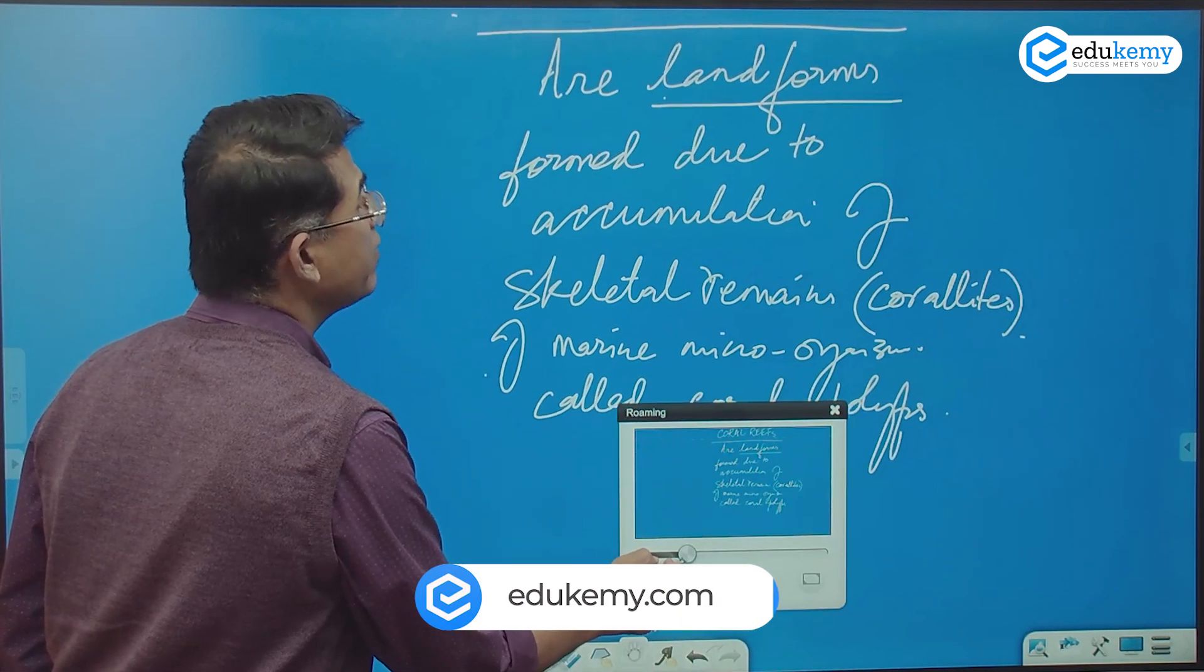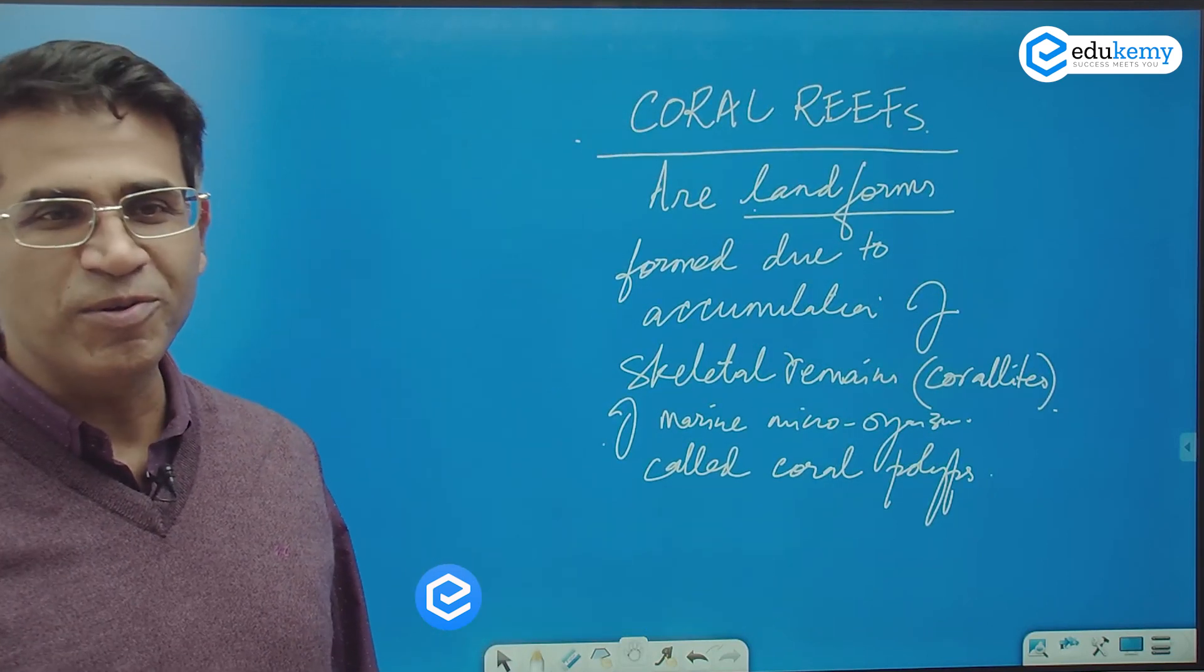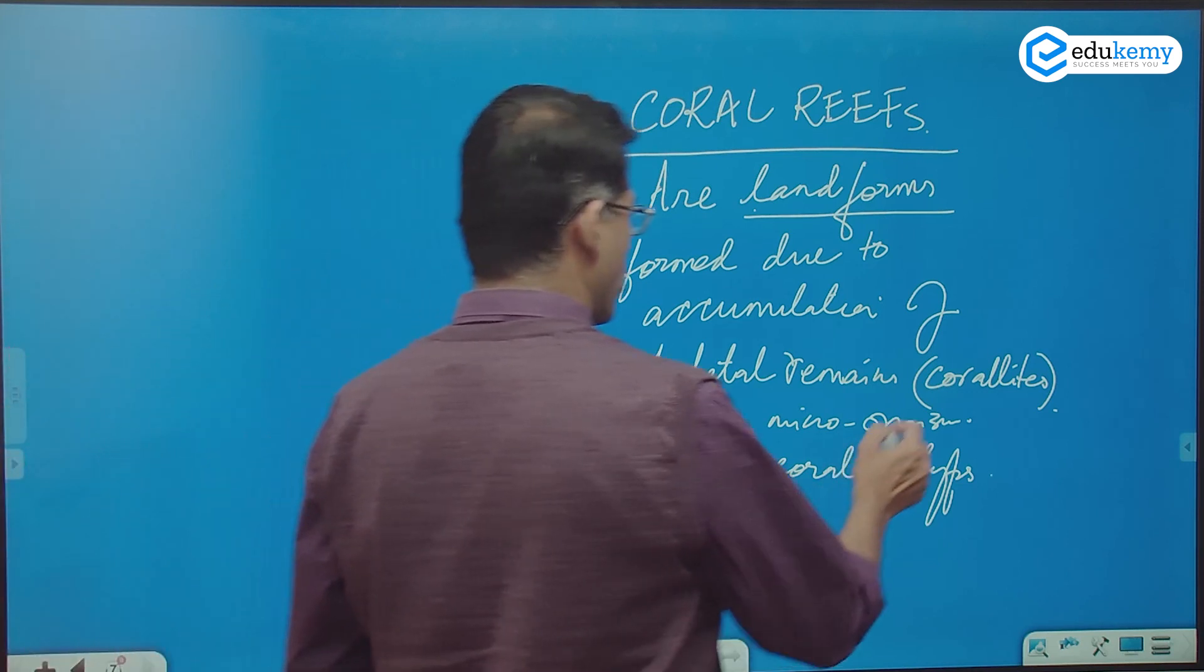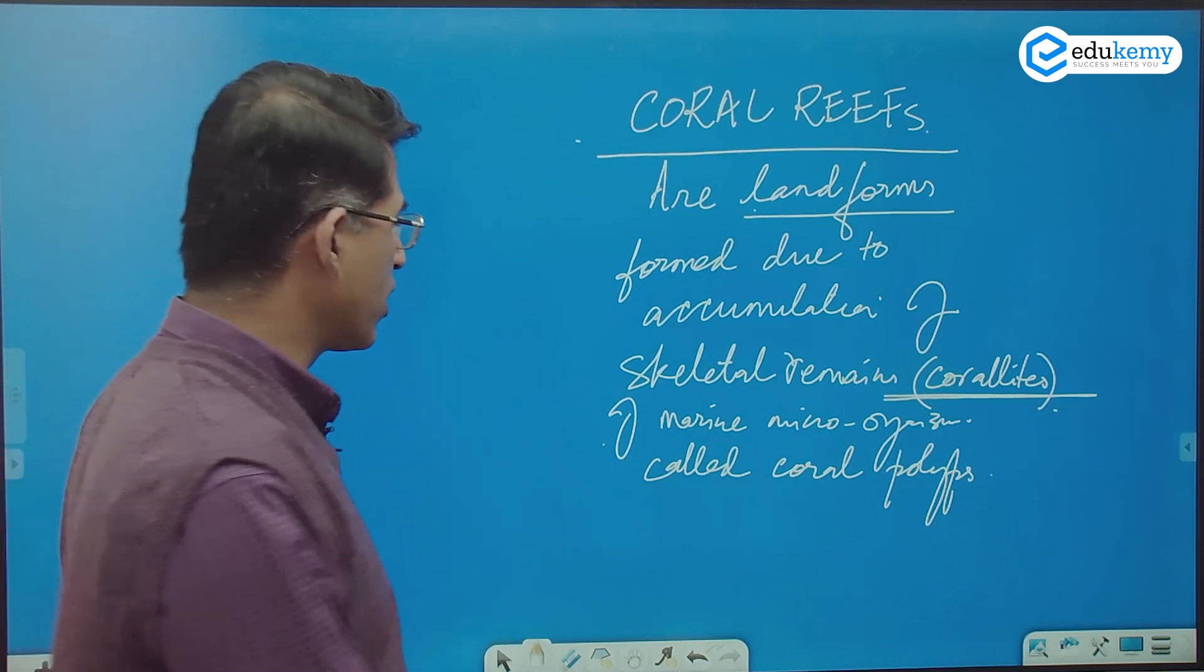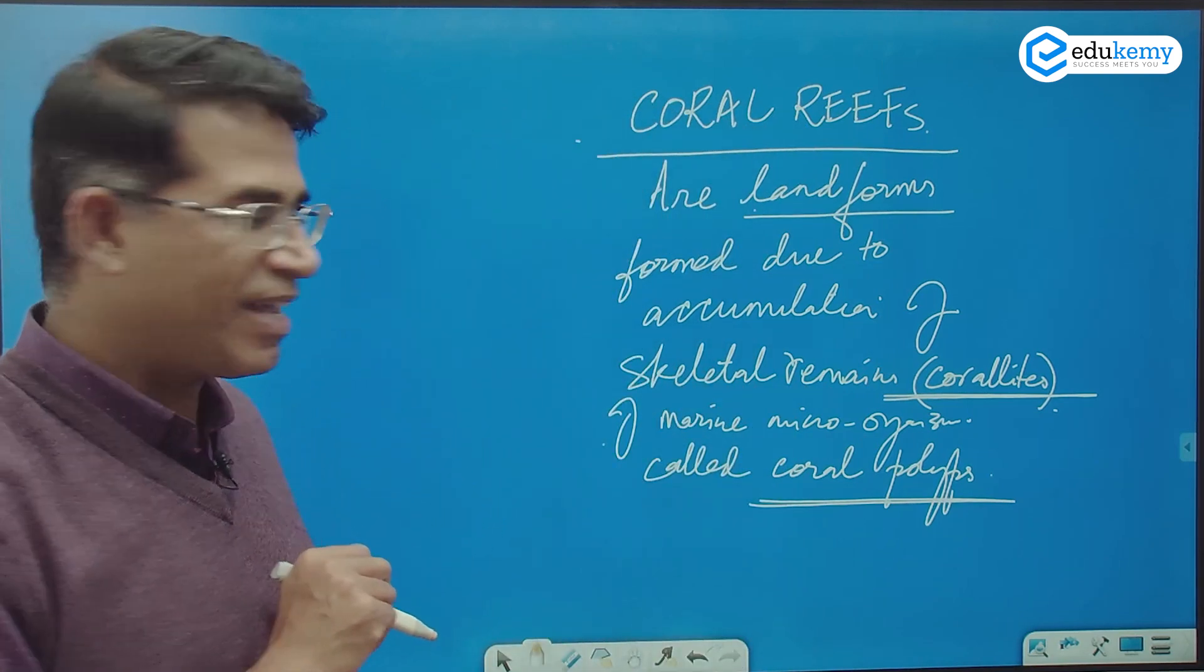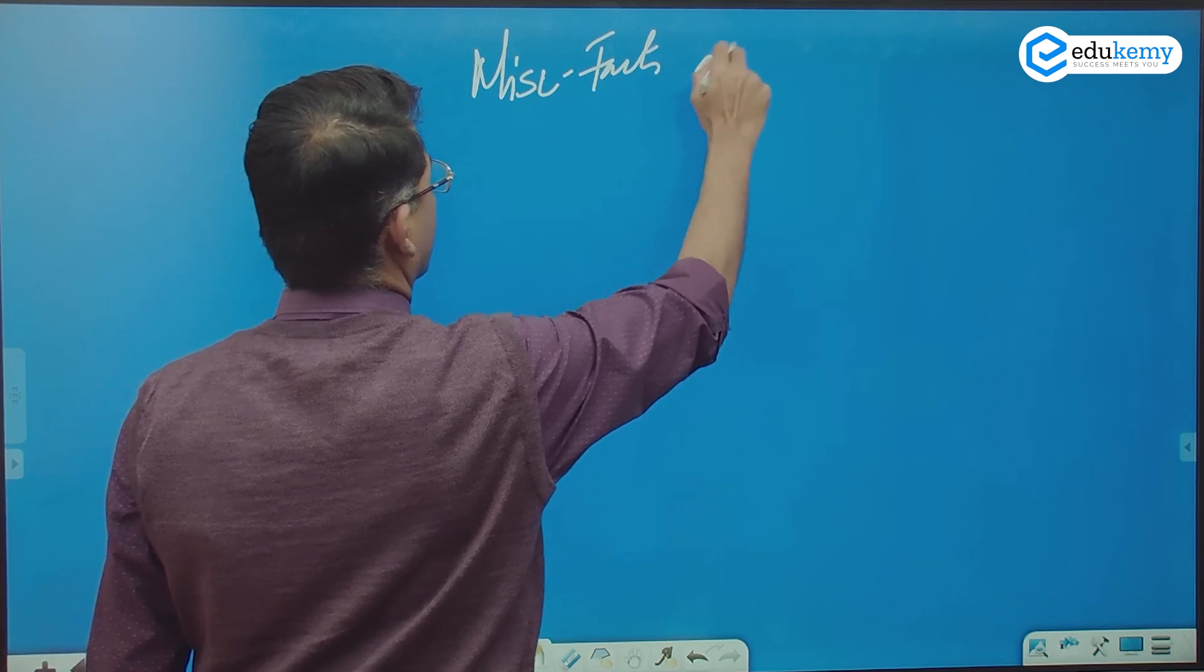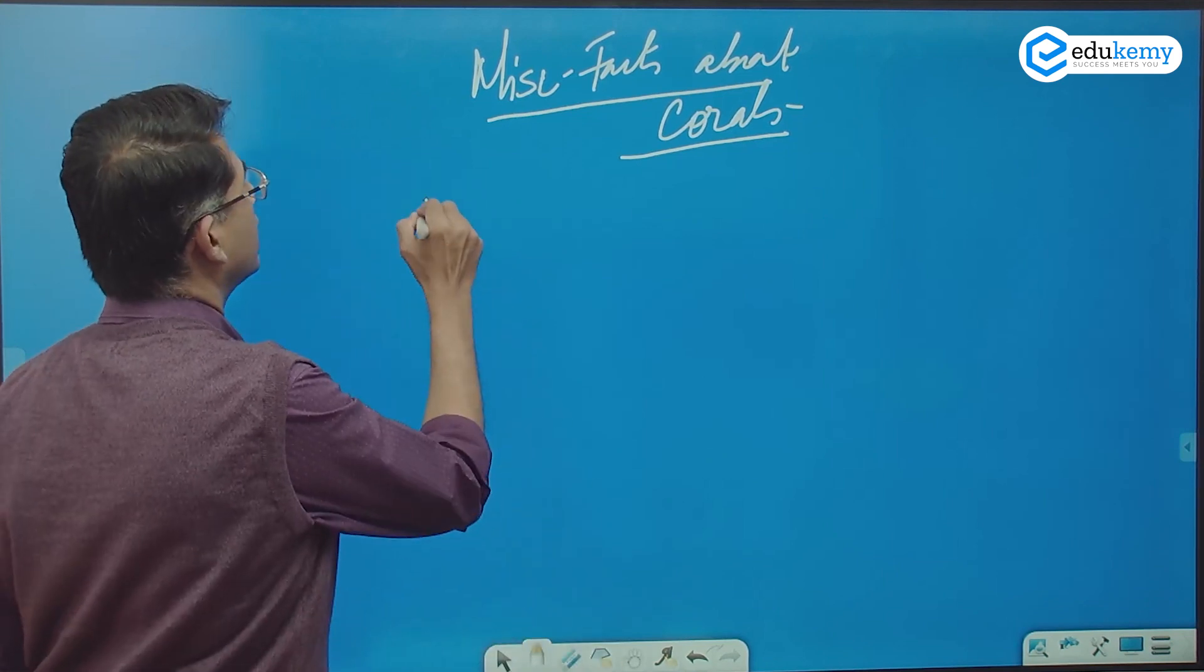Remember this: coral reefs are landforms formed due to accumulation of skeletal remains. The remains are also called as coral lights of marine organisms called coral polyps. Now some miscellaneous facts about corals. Number one: